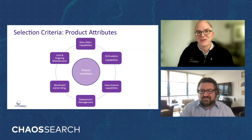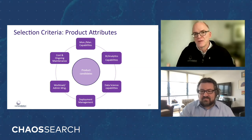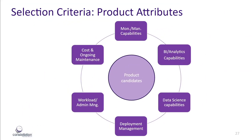That brings us finally to actually looking at these platforms and products available on the market. I would divide this into two areas of capabilities. There's the workloads you envision you want to run against this new analytical data platform — BI and analytics capabilities, data science and engineering, and monitoring and management log file analysis — which combination of those workloads do you want running on this analytical platform? Then you have to look at the aspects of the platform itself — how it runs, where it runs, deployment management, where and how it deploys, workload and administrative management. If you have competing workloads with tight SLAs and robust requirements, these workload management capabilities will be crucial. And then look at cost and ongoing maintenance.